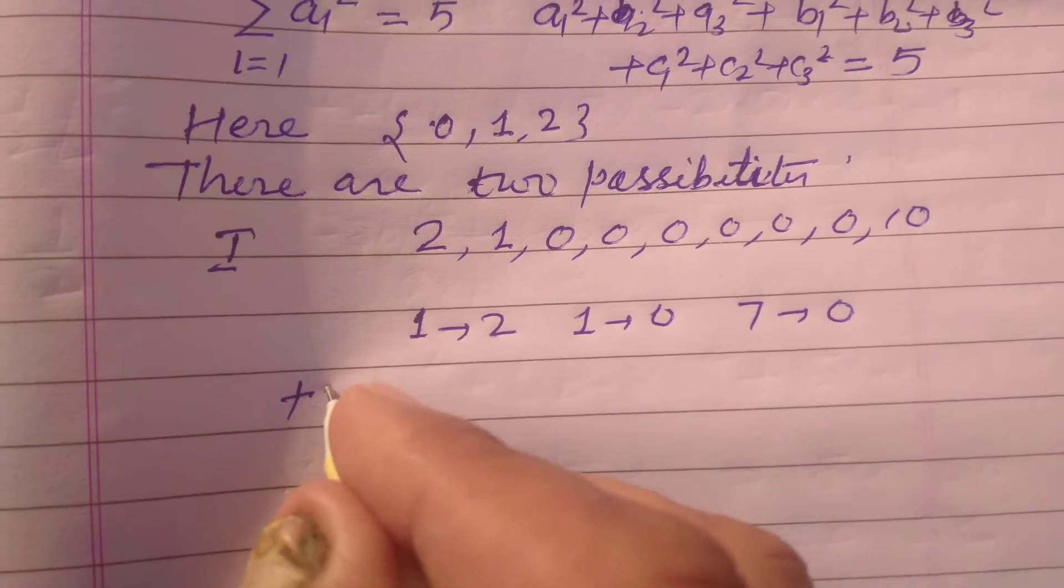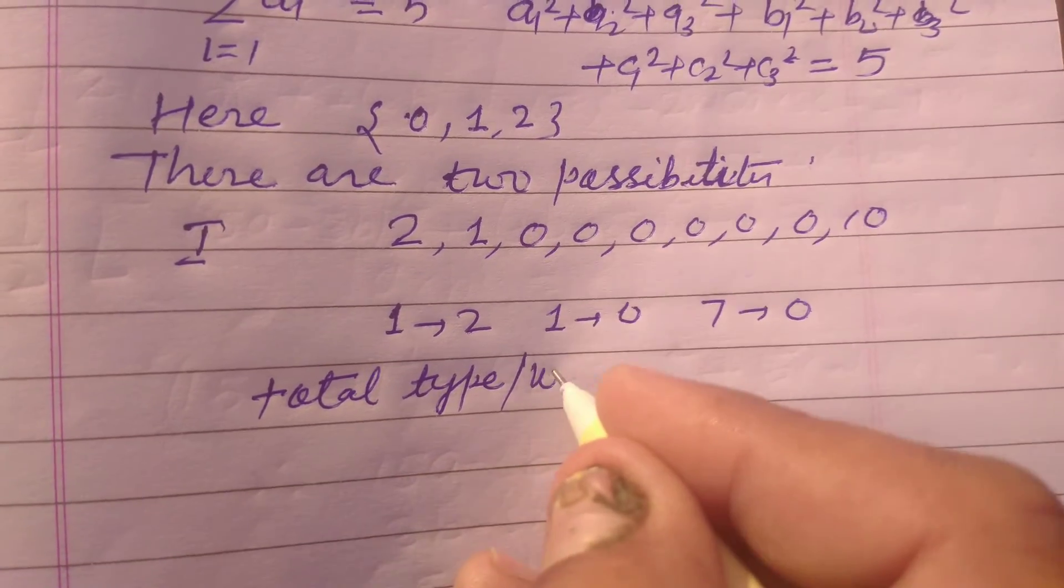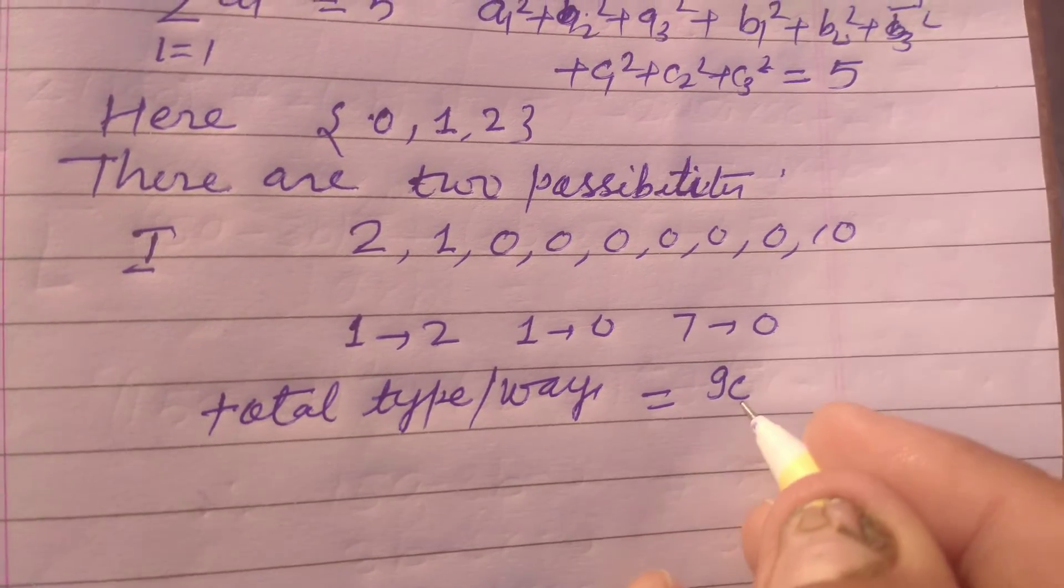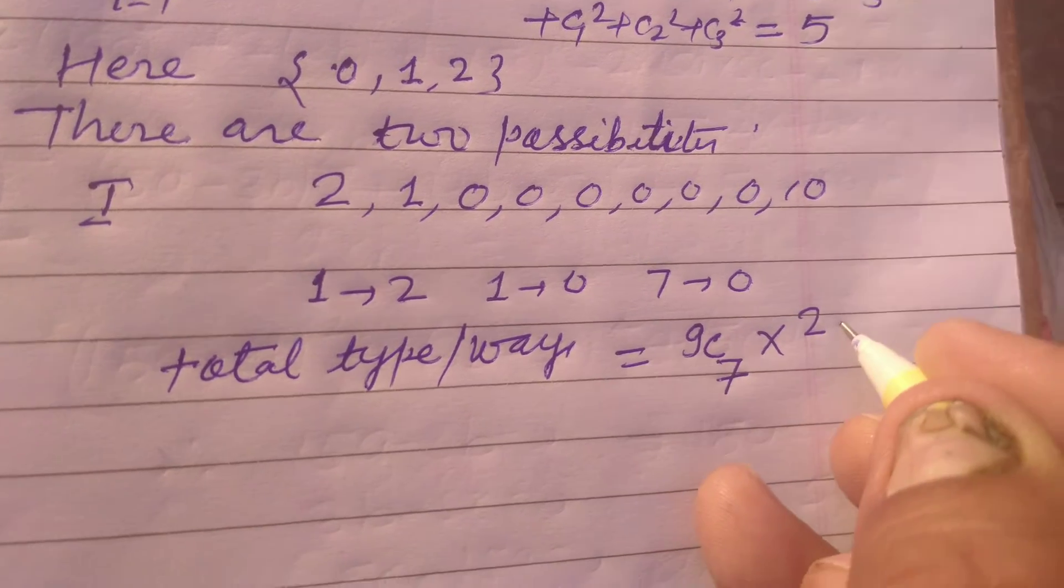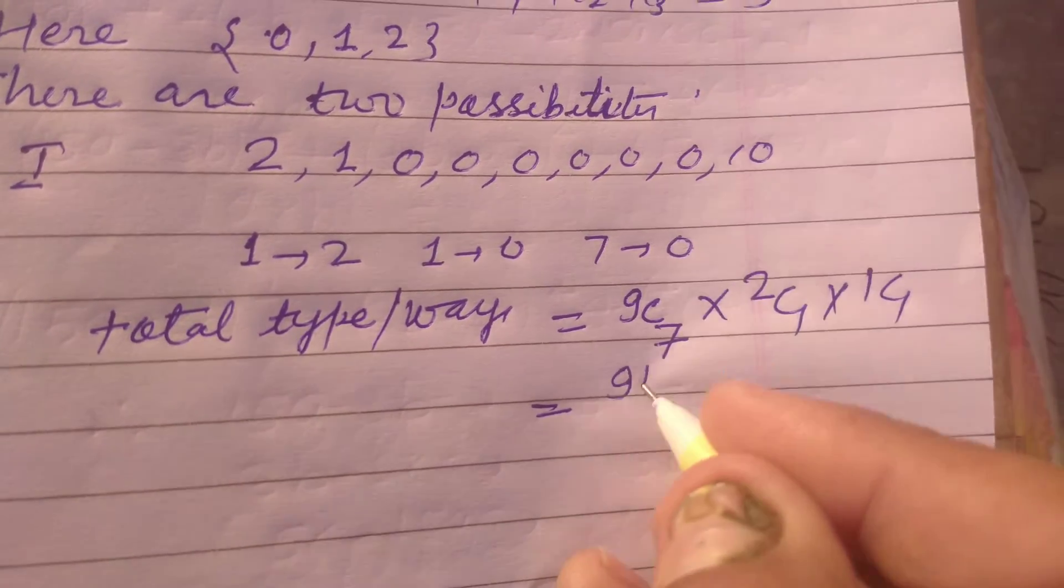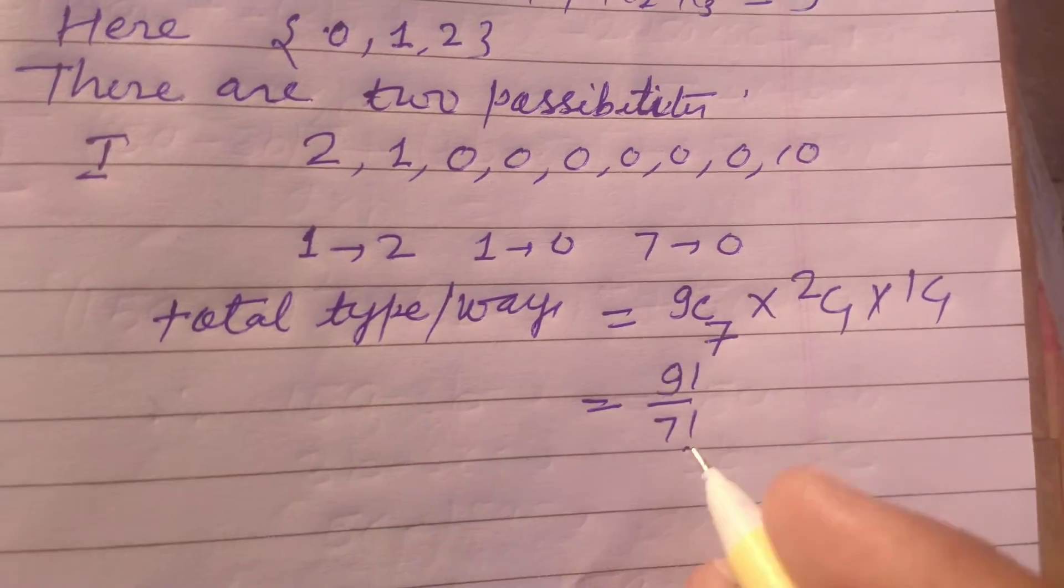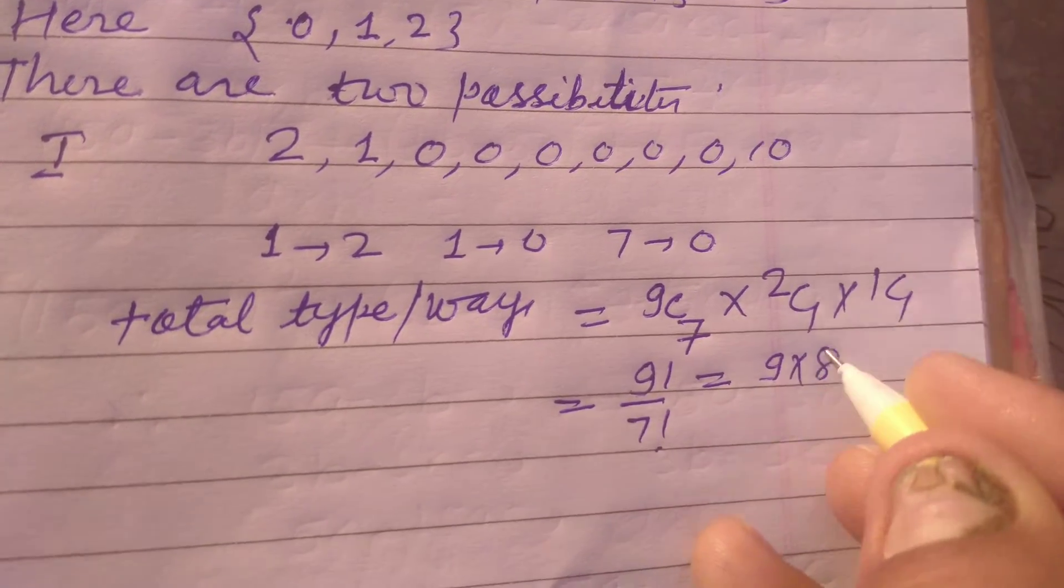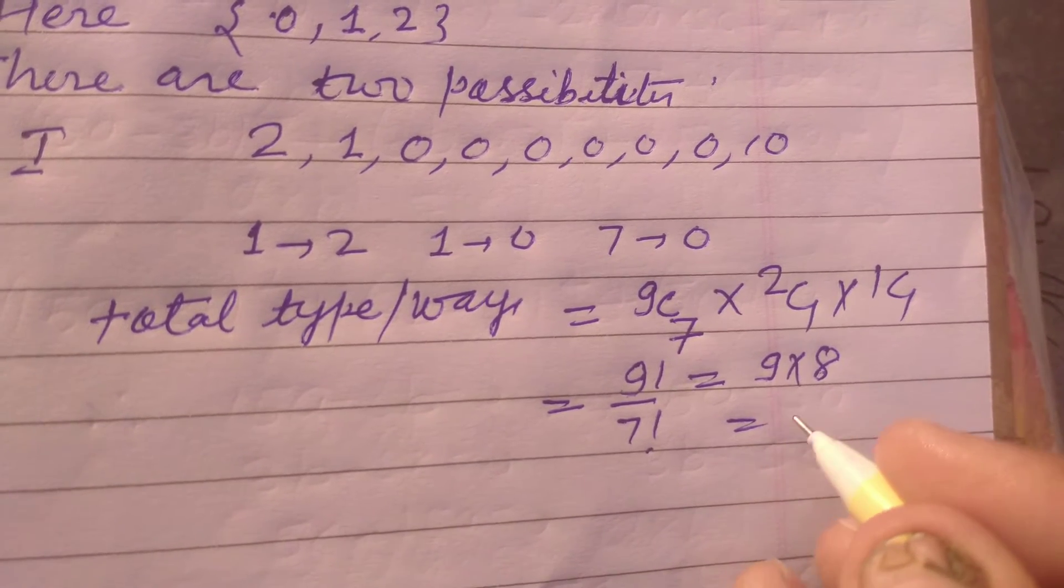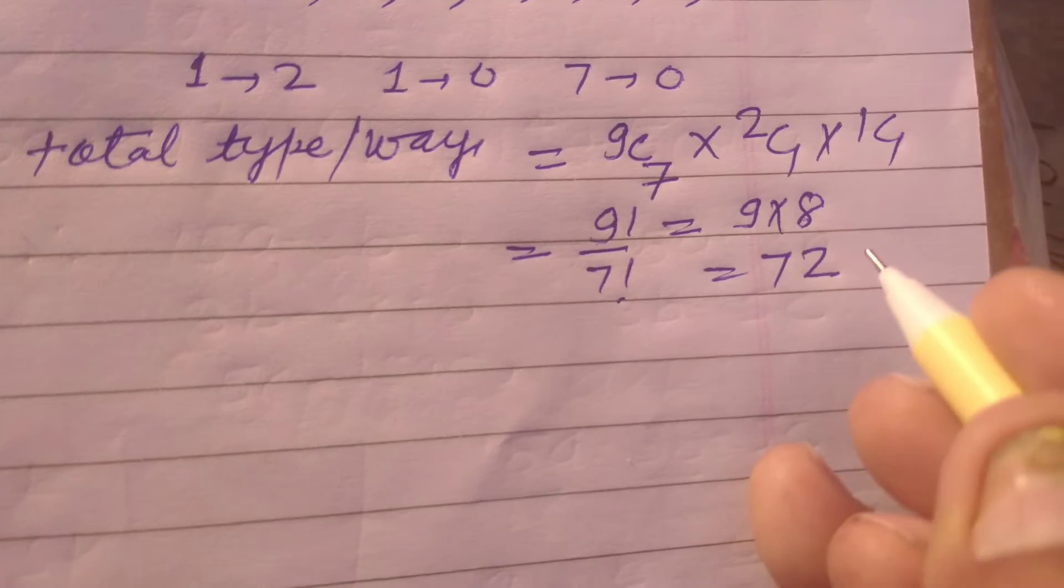So total types or total ways are factorial 9, or 9C7 into 2C1 into 1C1. And this will be factorial 9 over factorial 7. So factorial 9 is 9 into 8. 9 into 8 is 72.